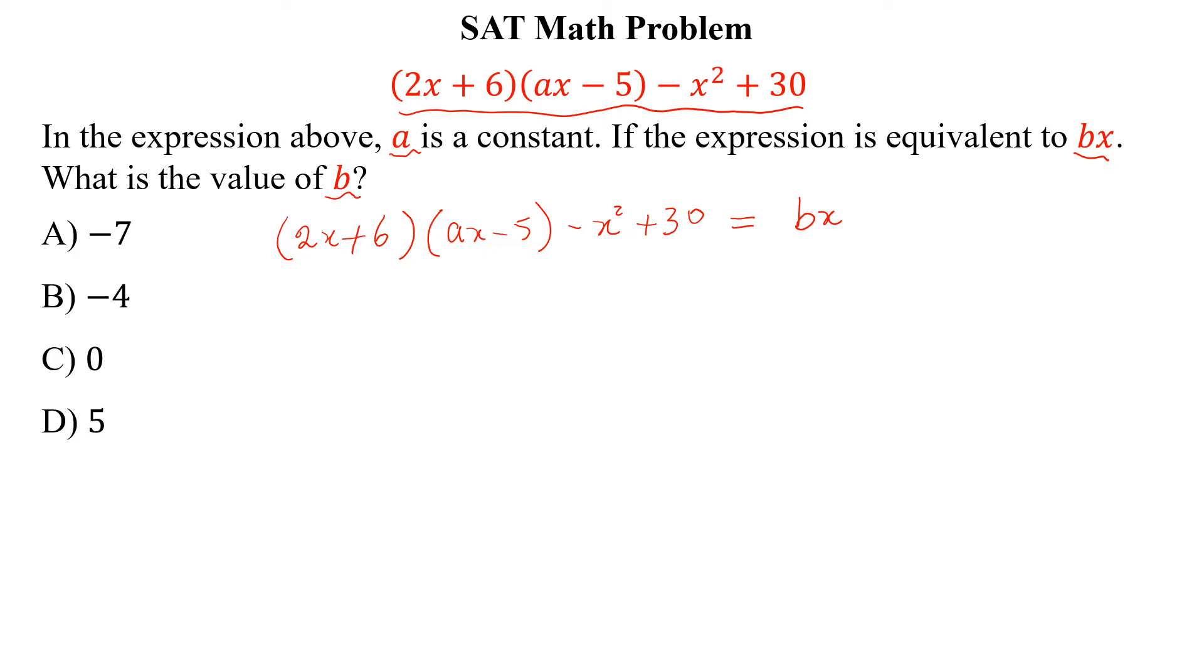We will multiply these two factors. So, 2Ax² - 10x + 6Ax - 30 - x² + 30 is equal to Bx.